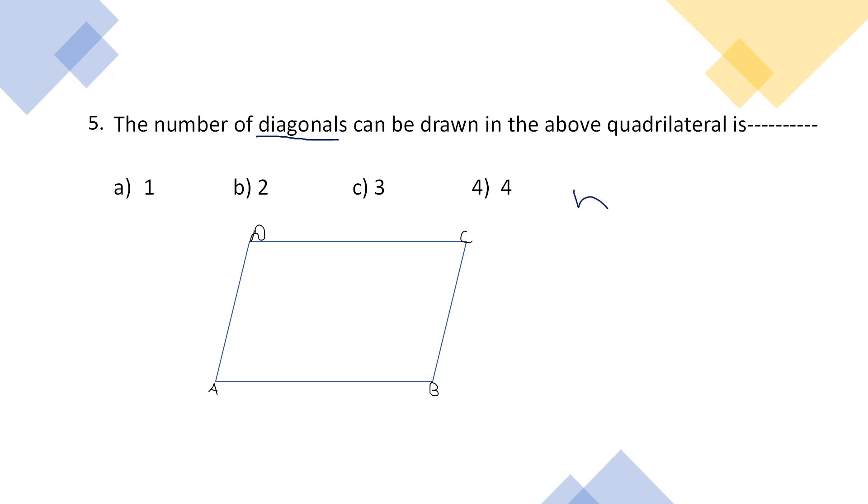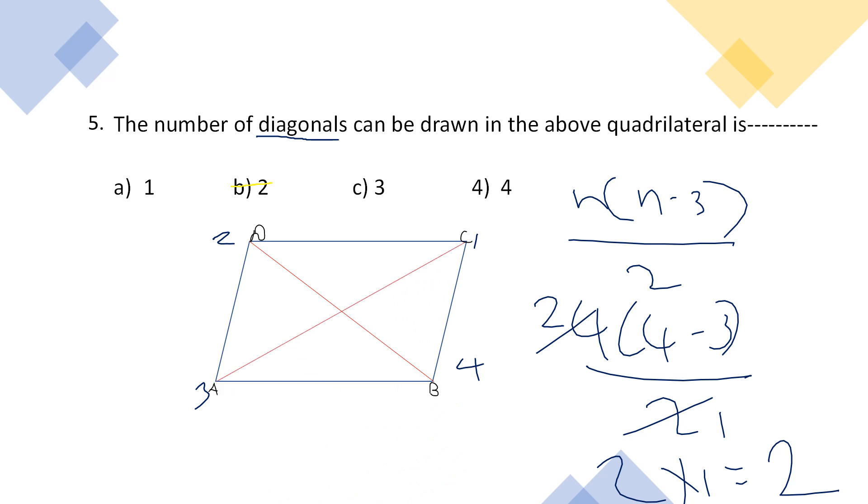That equation is N into N minus 3 divided by 2. Here, N means it has four sides: 1, 2, 3, and 4. N is number of sides. That is 4 into 4 minus 3 divided by 2. Here we can just cancel out. And 2 into 1 equals 2. We all know that it's two diagonals. Let's just mark how the two diagonals come, like this.